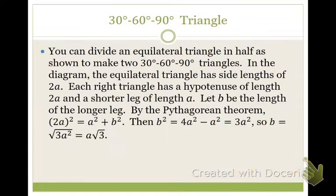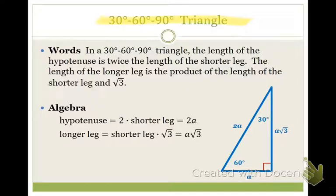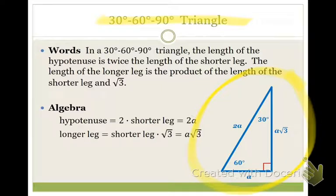Now let's look at the second type of triangle: a 30-60-90. A 30-60-90 triangle also has a set of rules that make the side lengths relate to each other in a certain way. If the angles are specifically 30, 60, 90, then I know something to be true about the side lengths. Write down 30-60-90 and copy down this template.